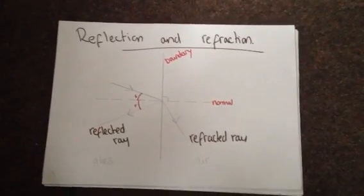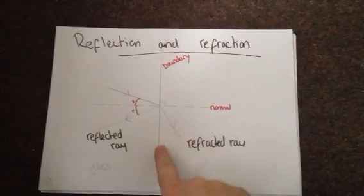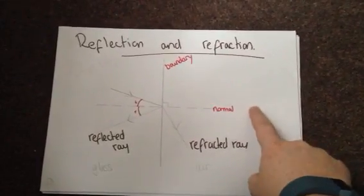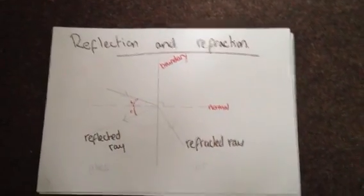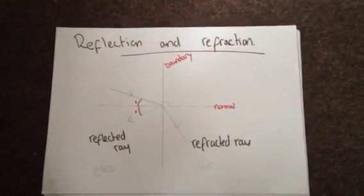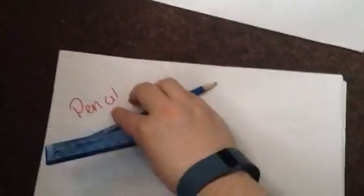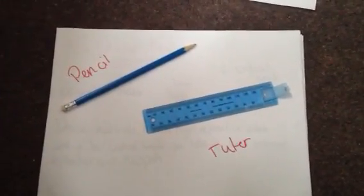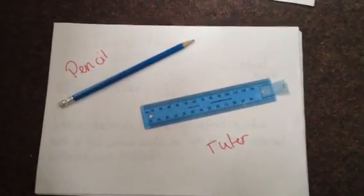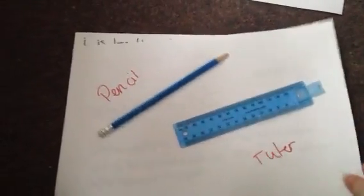Reflection and refraction come up a lot in this. You can see I've got my boundary here and my normal. My light ray comes in here, and just as you've seen before, some of it is reflected and some of it is refracted. I have my angle of incidence and my angle of reflection, which are measured against the normal. This drawing is done with a pencil and a ruler — in P3 it is very important that you use them when answering exam questions.